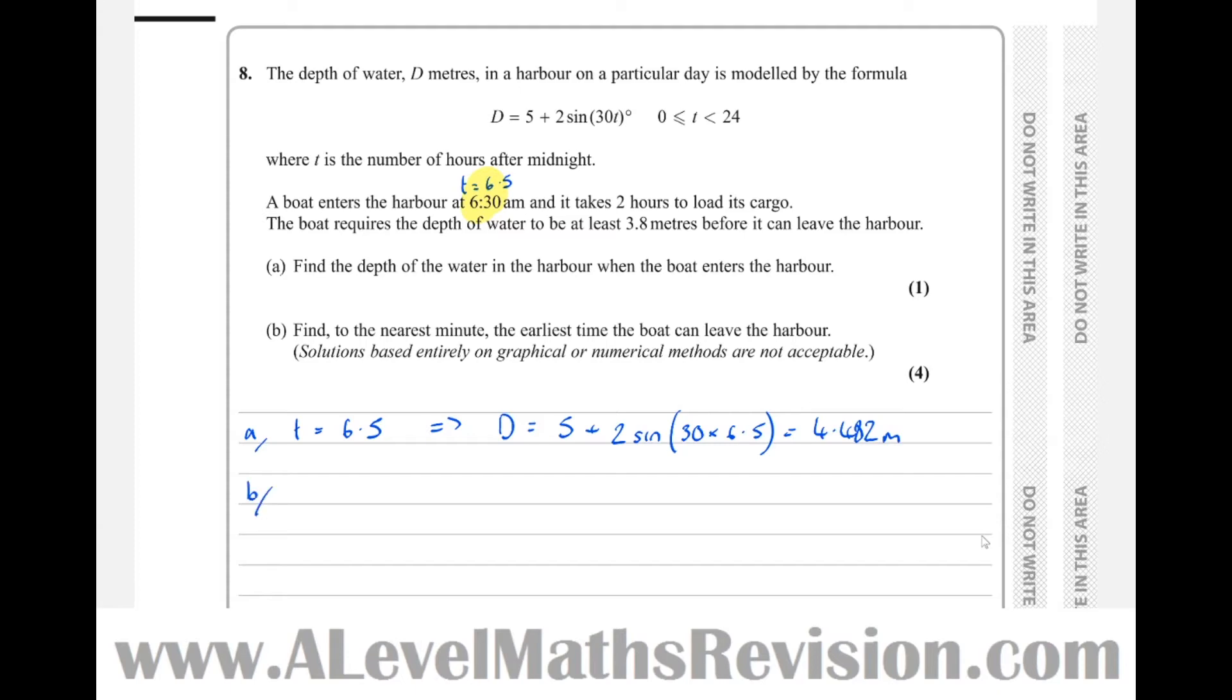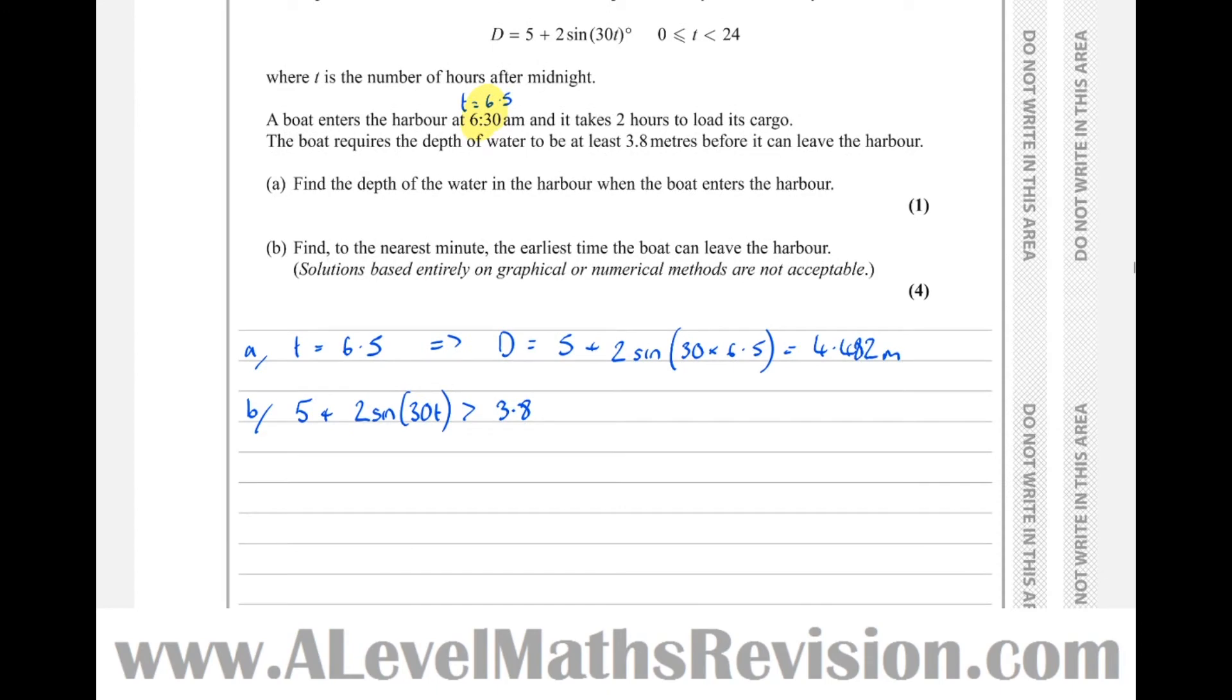Part (b): find to the nearest minute the earliest time the boat can leave the harbor. It takes two hours to load its cargo, and the boat requires the depth of water to be at least 3.8 meters before it can leave. So we want 5 + 2sin(30t) to be greater than 3.8. Let's rearrange this. Let's solve it for the equal to version first. Take away 5, I get 2sin(30t) equals 3.8 minus 5, which is negative 1.2, which means sine of 30t equals, dividing by 2, negative 0.6.